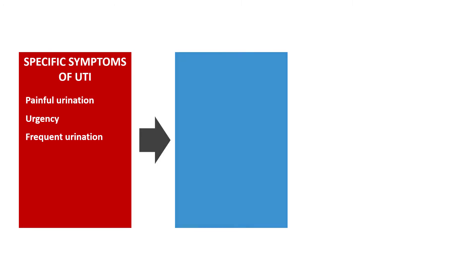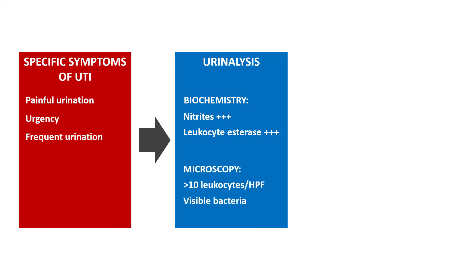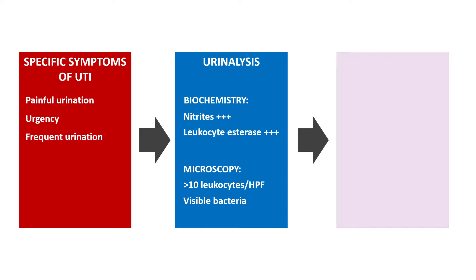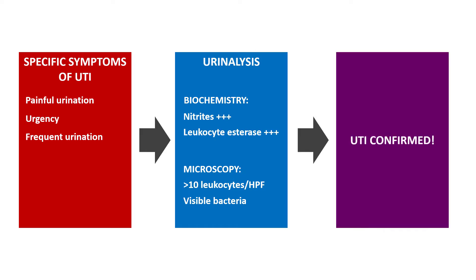Now, let's go back to our patient with painful urination. We ordered the urine test, and sure enough, it came back positive for nitrites and leukocyte esterase. Microscopy showed more than 50 leukocytes per high-power field. All in all, the diagnosis couldn't be simpler — it's a urinary tract infection. We administer an antibiotic and the patient gets better. Simple, right?